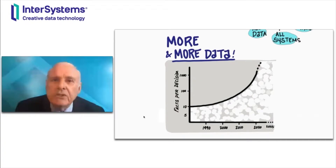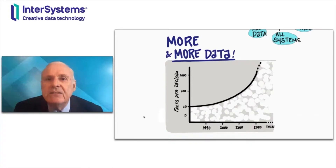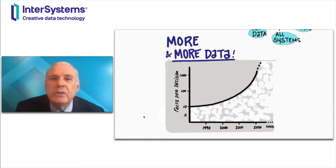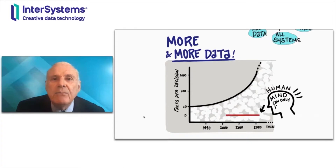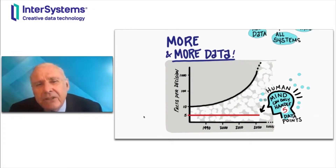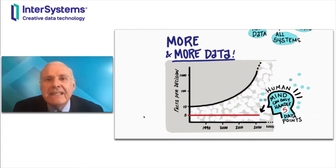Dr. William Stead at Vanderbilt University wrote an article a few years ago where he estimated the number of facts that exist per complex decision in healthcare. His estimate is that in 1980 there were about 10 facts per decision, and in 2020 there are about 1,000 facts per decision, and it continues to increase exponentially. The problem is that the average human can handle only about five facts in making a decision. I like to think I can do six or seven, but obviously I was behind in 1980, and now, like everyone else, I'm hopelessly behind.